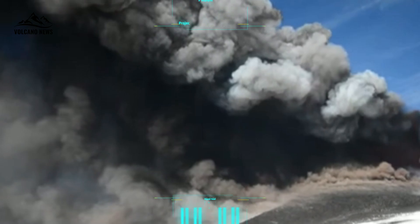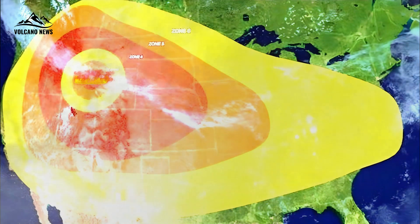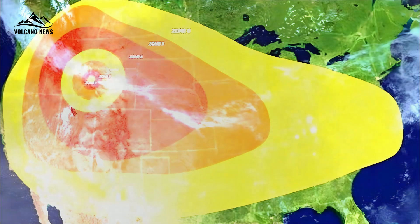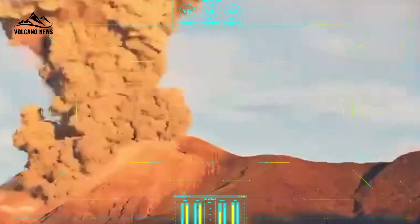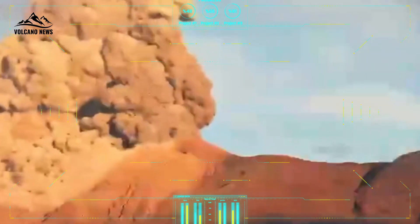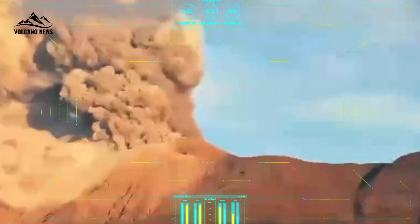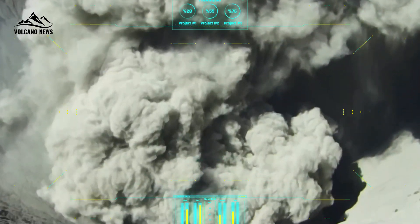For smaller columns, the wind controls the path of the ash column, resulting in ash falling in a zone extending downwind of the volcano. However, as an eruption increases in size, the height of the column often increases as well, allowing the column to spread out like an umbrella and deposit ash over a wider area.